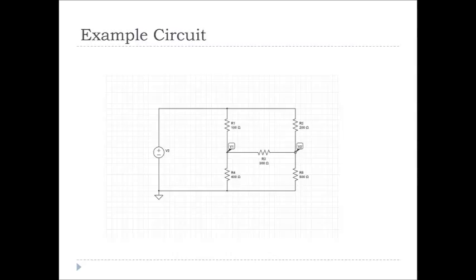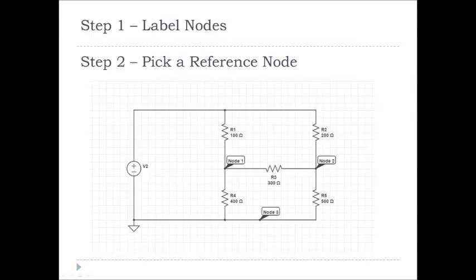So now we're going to look at an example of how to perform nodal analysis on a circuit. Using this circuit here we want to find voltages V1 and V2. The first step in nodal analysis is labelling nodes. As you can see here we have node 1 and node 2 representing the two voltages we want to find, and node 3, which we've picked as a reference node.